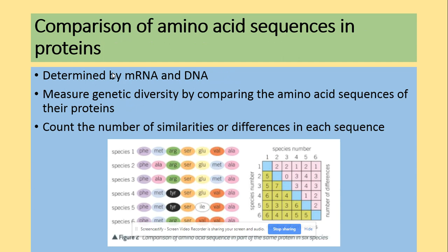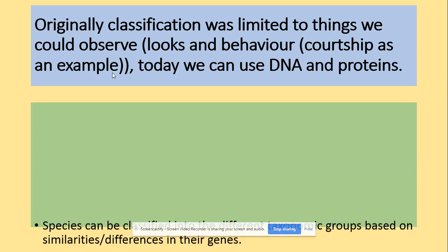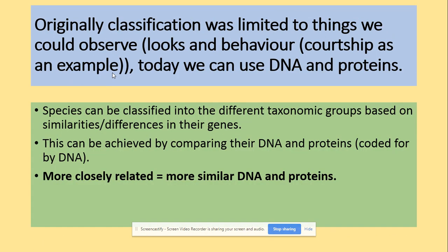Amino acid sequences can be used because amino acids are determined by the sequence of mRNA and DNA. We can use the sequence to count the number of similarities or differences between species. The original classification was limited to observable characteristics, but today we can use DNA and proteins. Species can be classified into taxonomic groups based on similarities in DNA and proteins — more closely related organisms have more similar DNA and proteins.